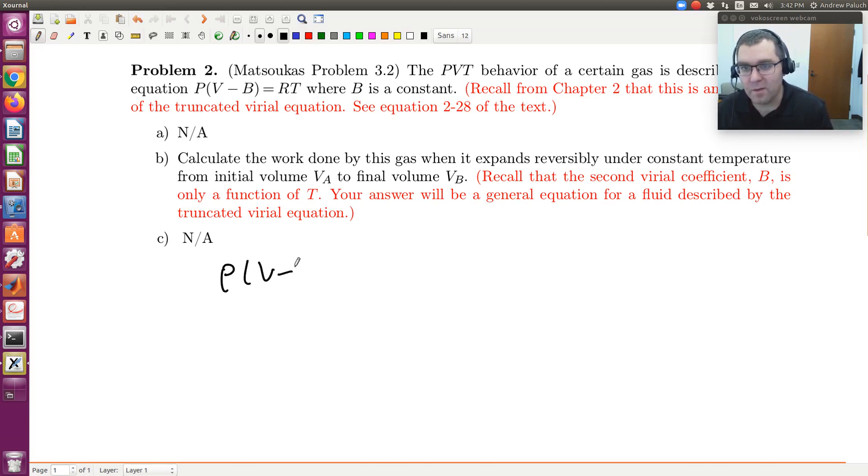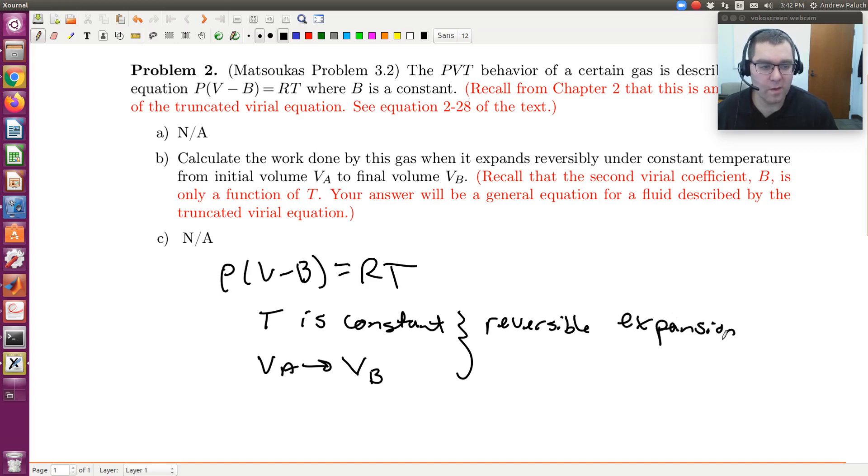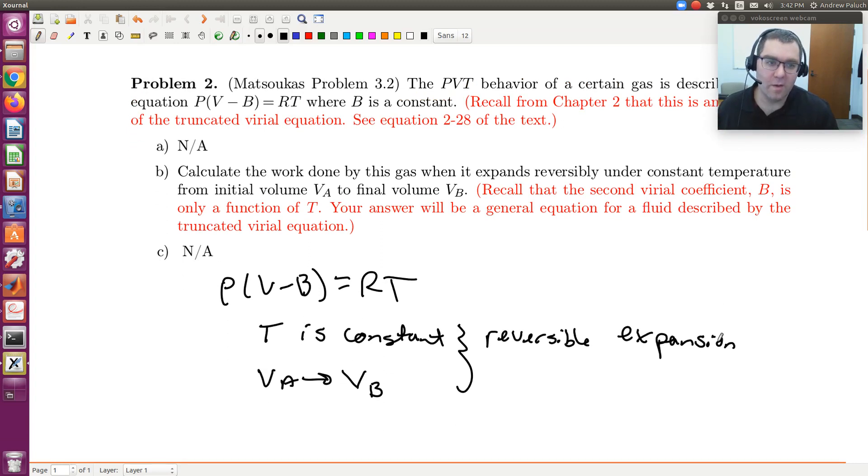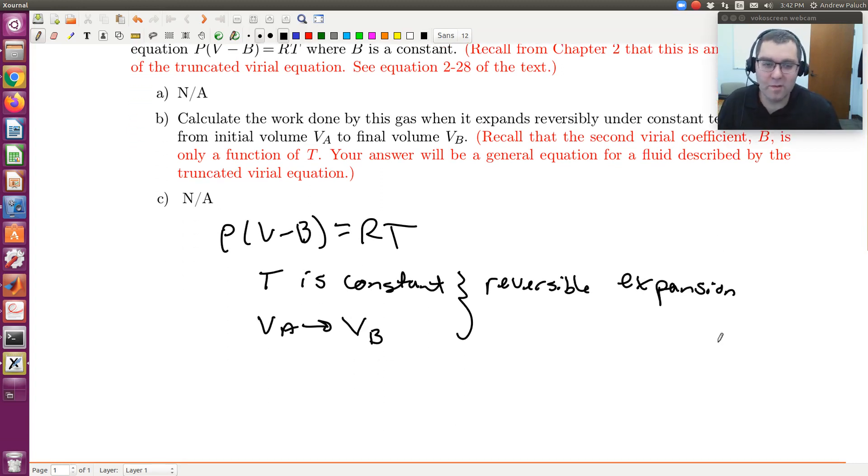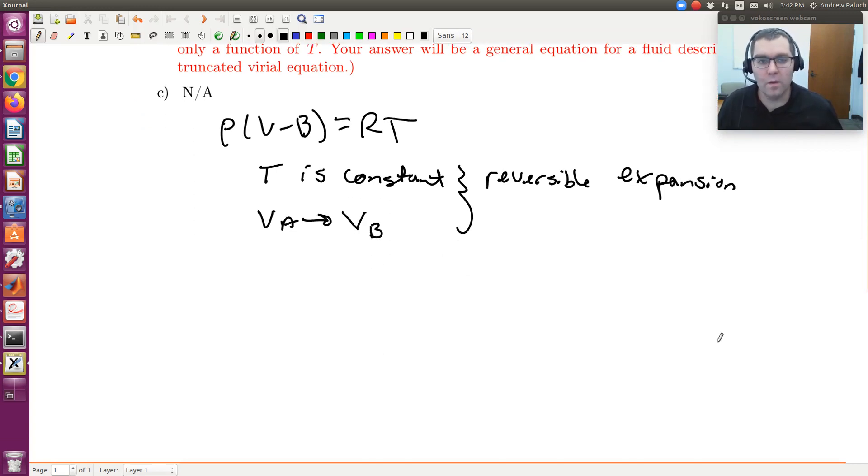We have our equation of state: P times V minus B equals RT. T is constant, and we're going from VA to VB. We're dealing with reversible expansion, though it could be compression as well, and the approach would be the same.